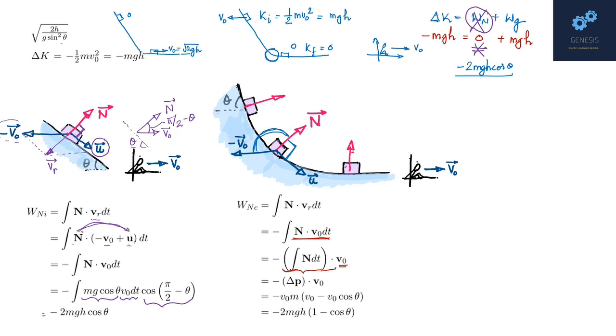And how do we deal with impulses? I don't need to know how much time this curved portion of the track took for the block, because of the impulse-momentum theorem. I don't need to evaluate this. All I need to know is how the momentum changed as the block started here and ended here. So you can see that this integral N dt I've written as Δp vector dot v0 vector.